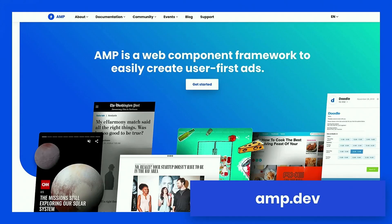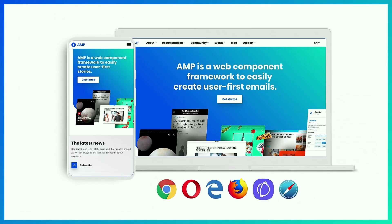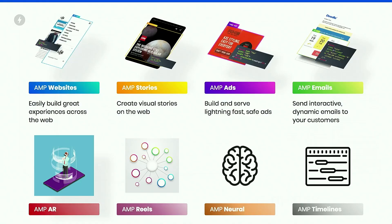You learn AMP once and use it everywhere. Where do you learn it? On amp.dev, which is built completely with AMP. It comes with courses, tools, docs, themes, use cases, and starter kits. AMP works completely cross-browser. And once you learn one version of AMP, you can use it for all the other AMPs — AMP AR, AMP reels, AMP neural nets, AMP timelines. You learn it once and apply it everywhere.